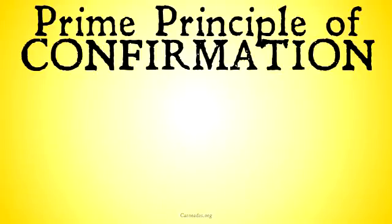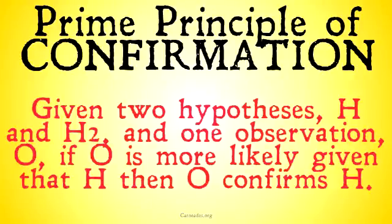The confirmation fine-tuning argument relies on something known as the prime principle of confirmation, which we stated in the previous video as this: given two hypotheses, H and H2, and one observation O, if O is more likely given H than given H2, then O confirms H.